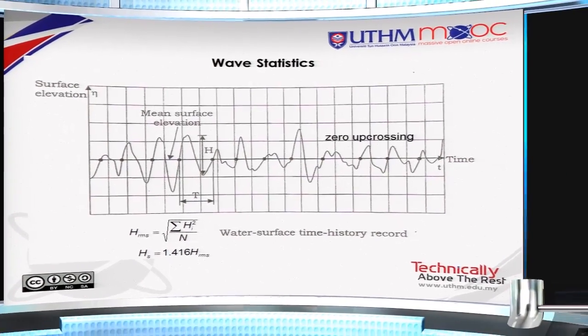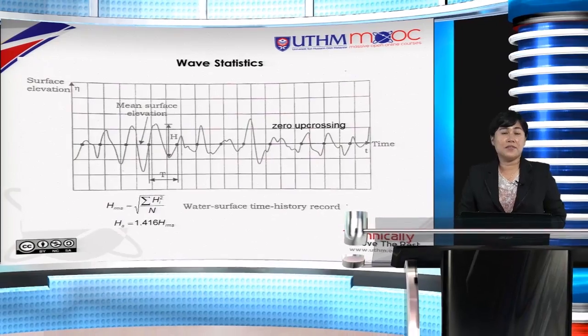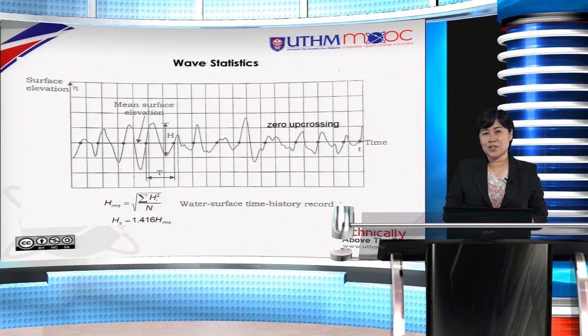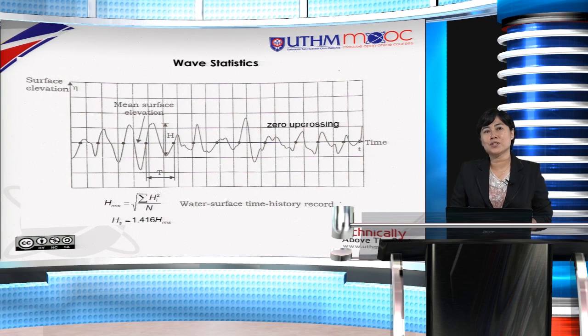This is the time history record of the surface elevation. It's actually very irregular, right? How are we going to determine a particular wave height to represent all this randomness?